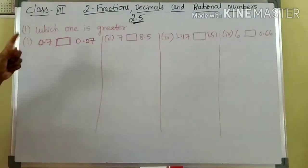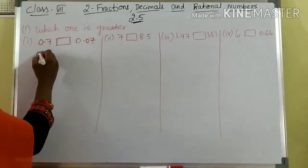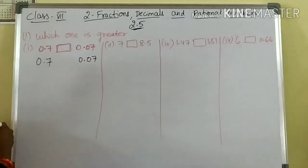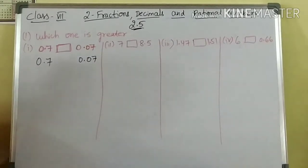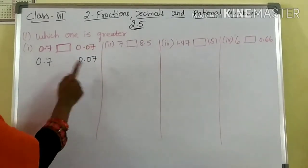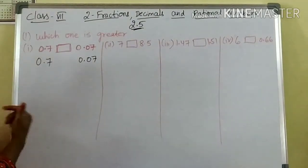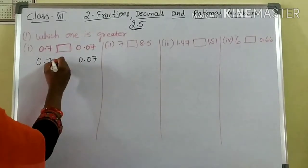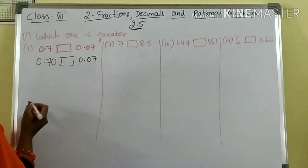In the first few questions: which one is greater? If you observe 0.7 or 0.07, which is greater? Here, decimal after one number; here, decimal after two numbers — they are not like decimal fractions. So we have to convert into like decimal fractions by keeping zeros at the last. You can write this as 0.70 and here 0.07.